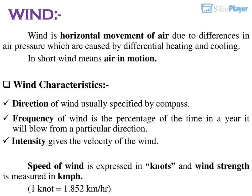Wind is the horizontal movement of air due to differences in air pressure, which are caused by differential heating and cooling. In short, wind means air in motion. Wind characteristics: Direction of wind is usually specified by compass. Frequency of wind is the percentage of time in a year it will blow from a particular direction. Intensity gives the velocity of the wind. Speed of wind is expressed in knots and wind strength is measured in km/h.